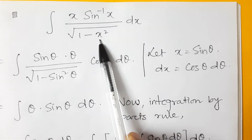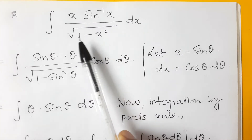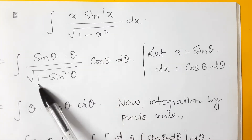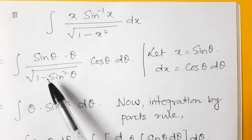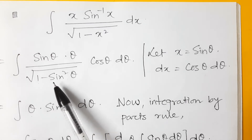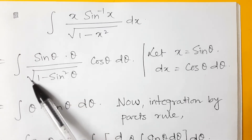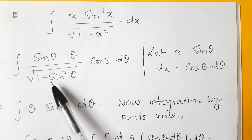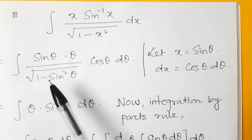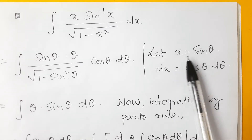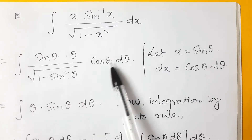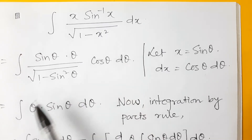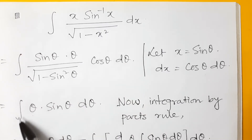If we put x = sin θ, the denominator becomes √(1 − sin²θ), and 1 − sin²θ = cos²θ, so √(cos²θ) = cos θ. That is why we take x = sin θ — so that this cos θ and the cos θ from dx cancel, leaving us with the integration of θ · sin θ dθ.